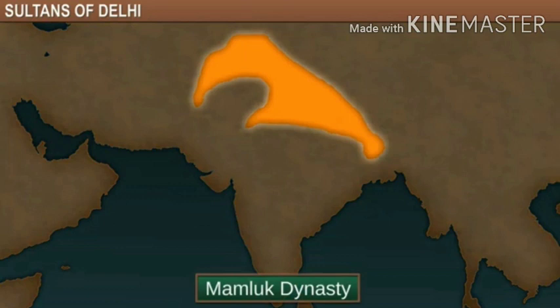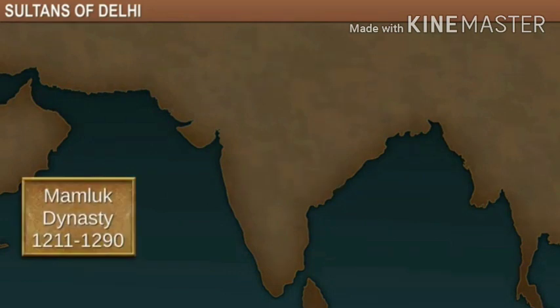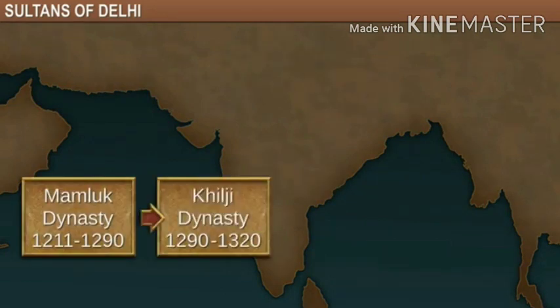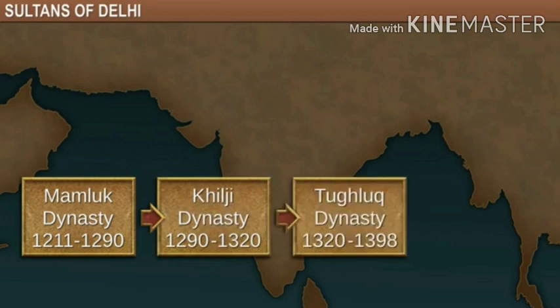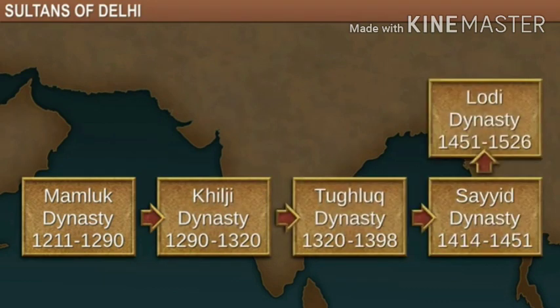From 1206 to 1526, Delhi was ruled by many rulers of different Muslim dynasties. They all preferred the title of Sultan, and so this period of history came to be known as the Delhi Sultanate. It started with the Mamluk dynasty, followed by the Khilji, Tughlaq, Sayyid and Lodhi dynasty.